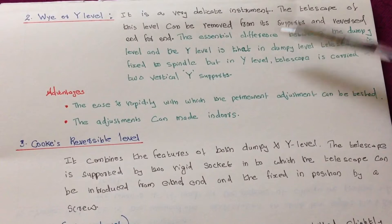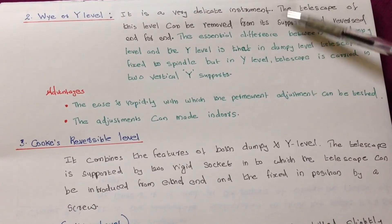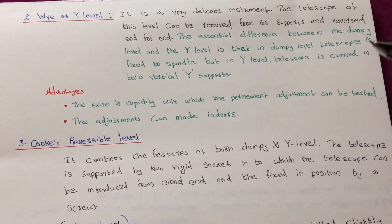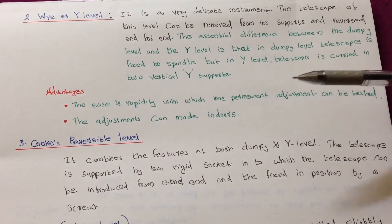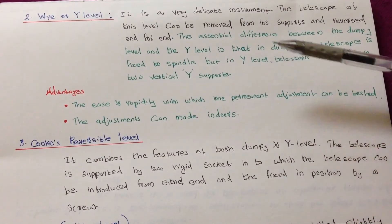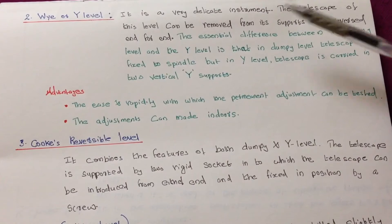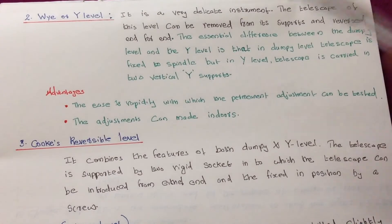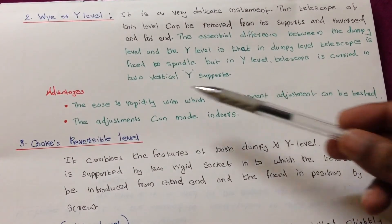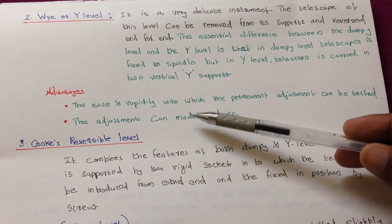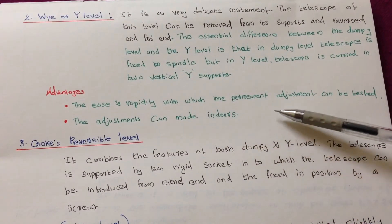One more thing is that the telescope of this level can be removed from its supports and reversed, but dumpy level is a fixed one. So this is about Y level. There are two advantages mentioned here: the ease and rapidity with which the permanent adjustment can be tested.